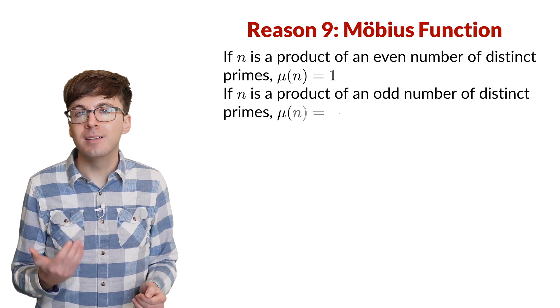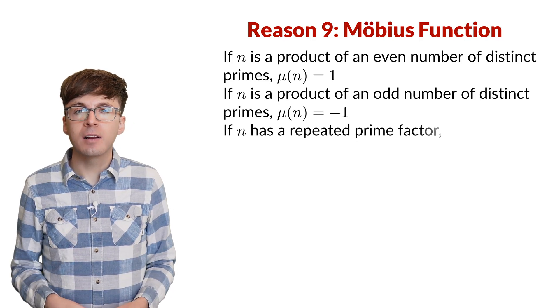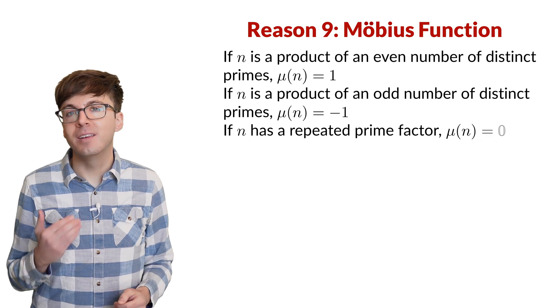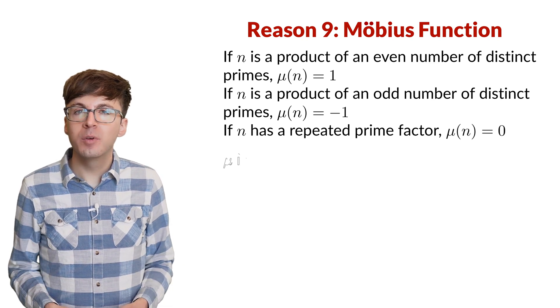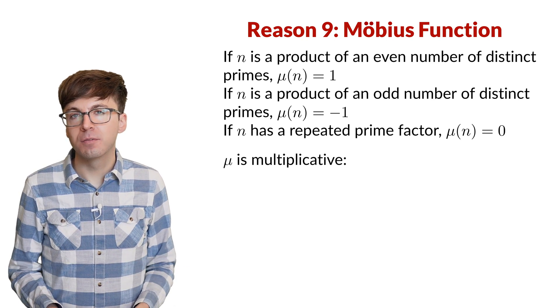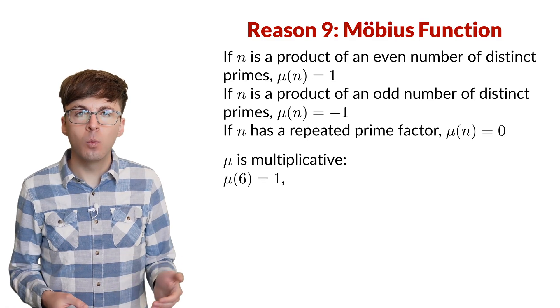If n has a repeated prime factor, then the Mobius function is 0. One nice property of the Mobius function is its multiplicative. For example, mu of 6 is 1, since 6 has the prime factors 2 and 3.